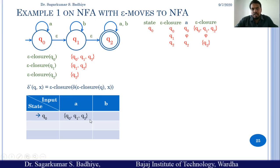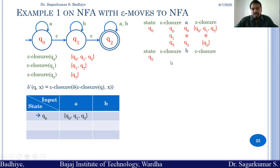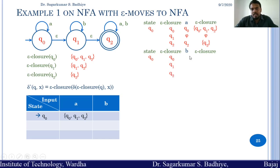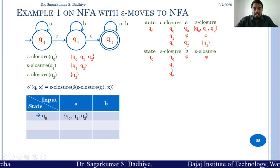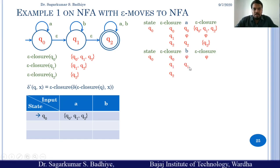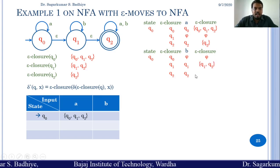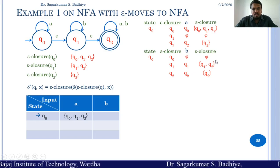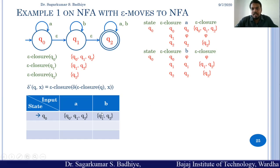Similarly, we compute the transition from q0 on input B. Epsilon closure of q0 is q0, q1, q2. Q0 on B has no transition, giving phi; q1 on B goes to q1 and epsilon closure of q1 is q1, q2; q2 on B goes to q2 and epsilon closure of q2 is q2. The union of these states is q1 and q2, so q0 on B goes to q1 or q2 in the equivalent NFA.